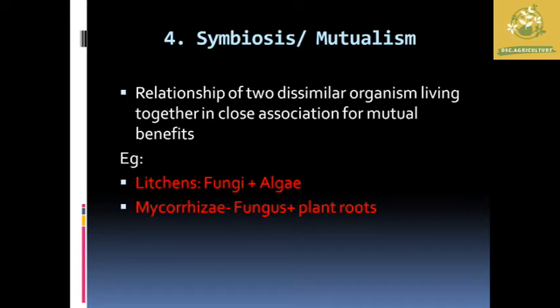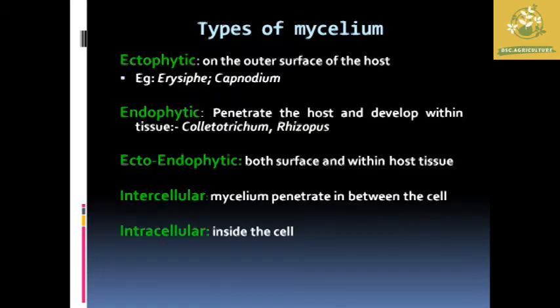Symbiosis, also known as mutualism, involves dissimilar organisms that form a close association with mutual benefits. For example, fungi and algae form lichens, which are also known as environmental indicators. Another example is mycorrhiza, which is the mutual association of a fungus with plant roots.